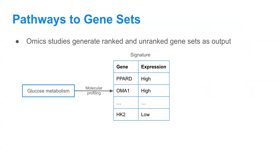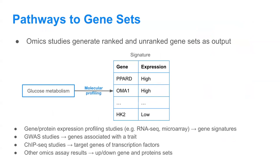Omics studies will focus on some process, disease, compound, or condition. Through molecular profiling, you can generate a signature which can then be turned into a ranked or unranked gene set. Common types of molecular profiling include gene or protein expression profiling studies — such as RNA sequencing or microarrays — which generally produce a gene signature. There are also GWAS studies, which produce sets of genes associated with a trait; CHIP-seq studies, which identify target genes of transcription factors; and many other omics assays that produce up and down gene or protein lists.